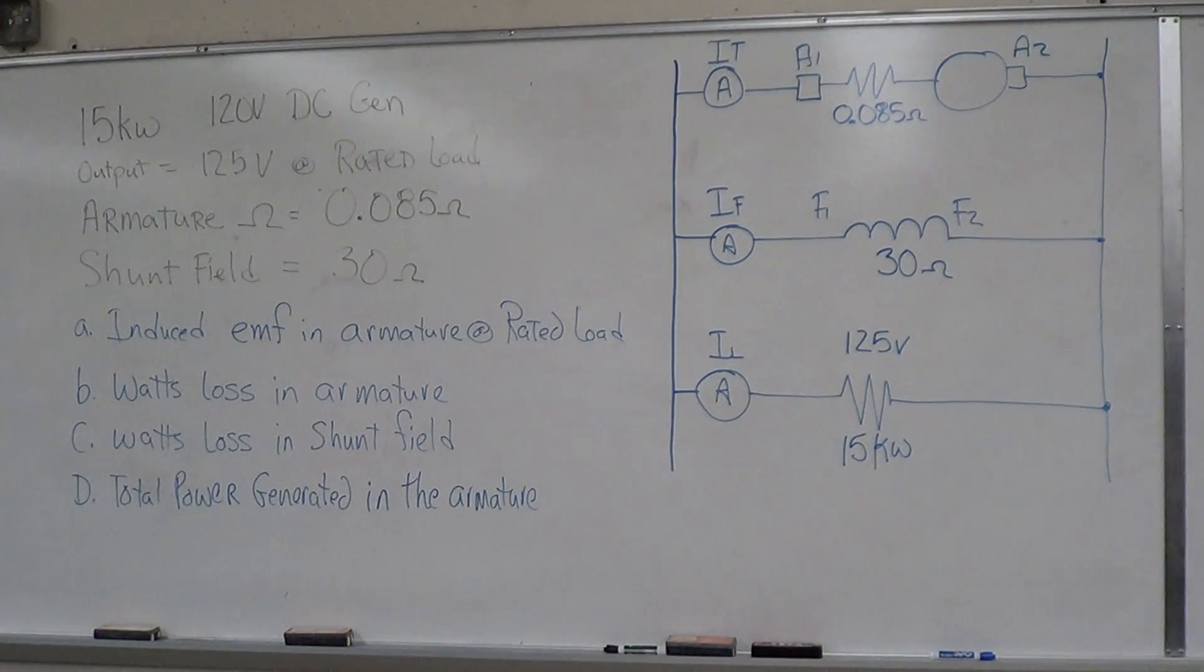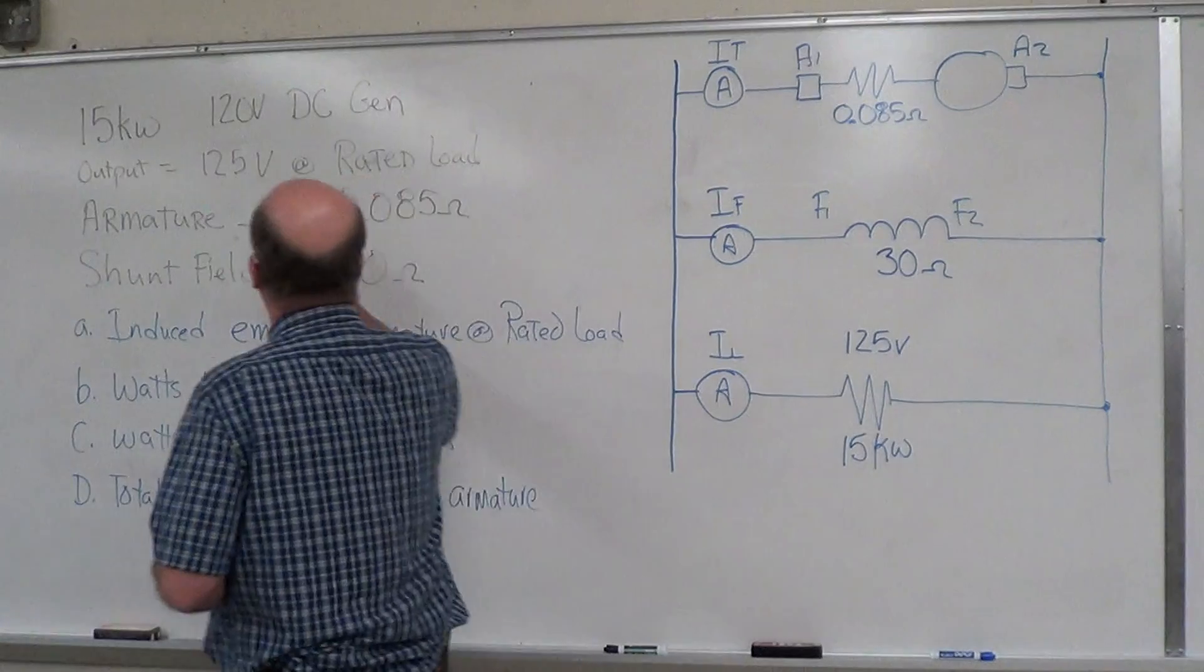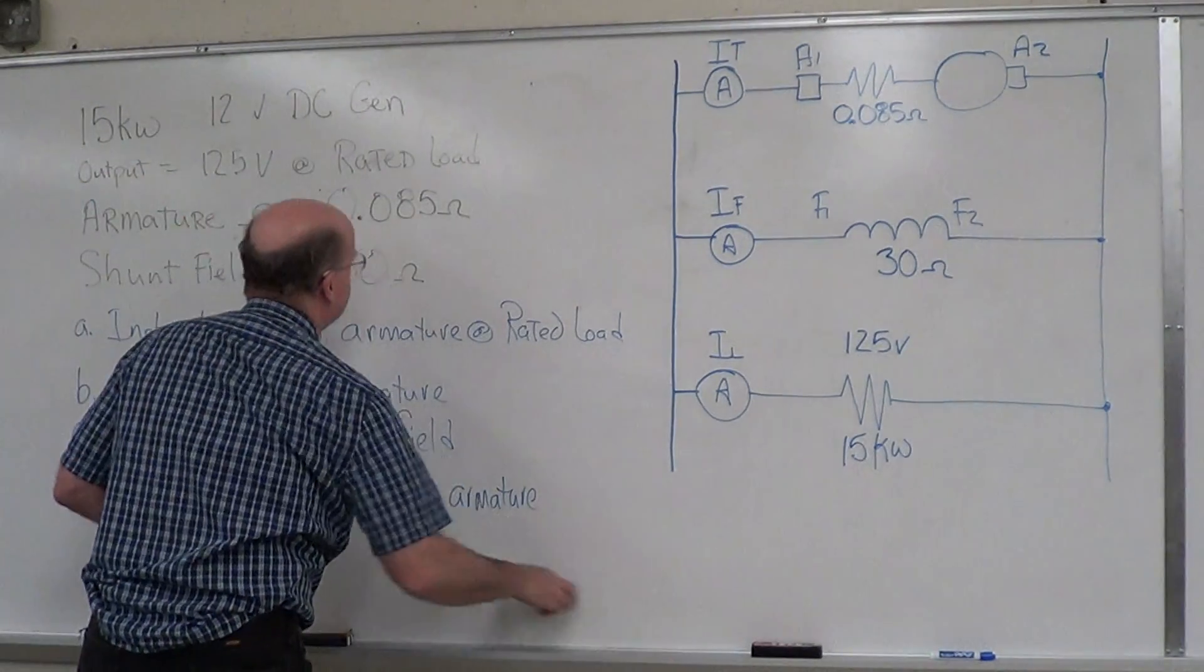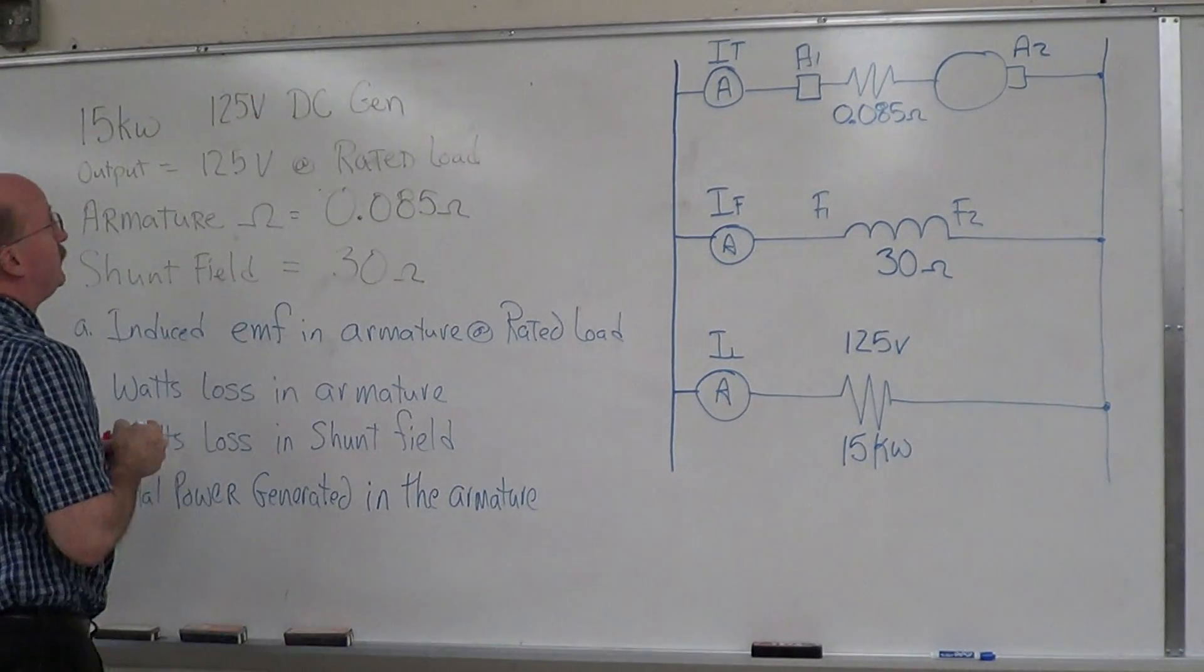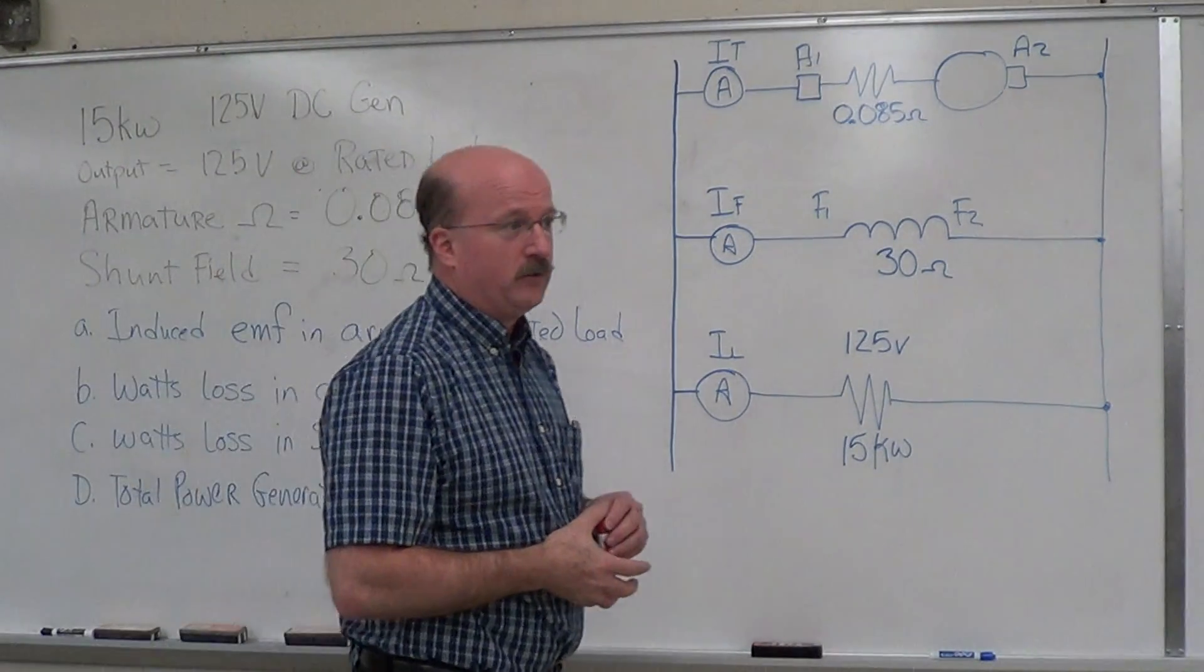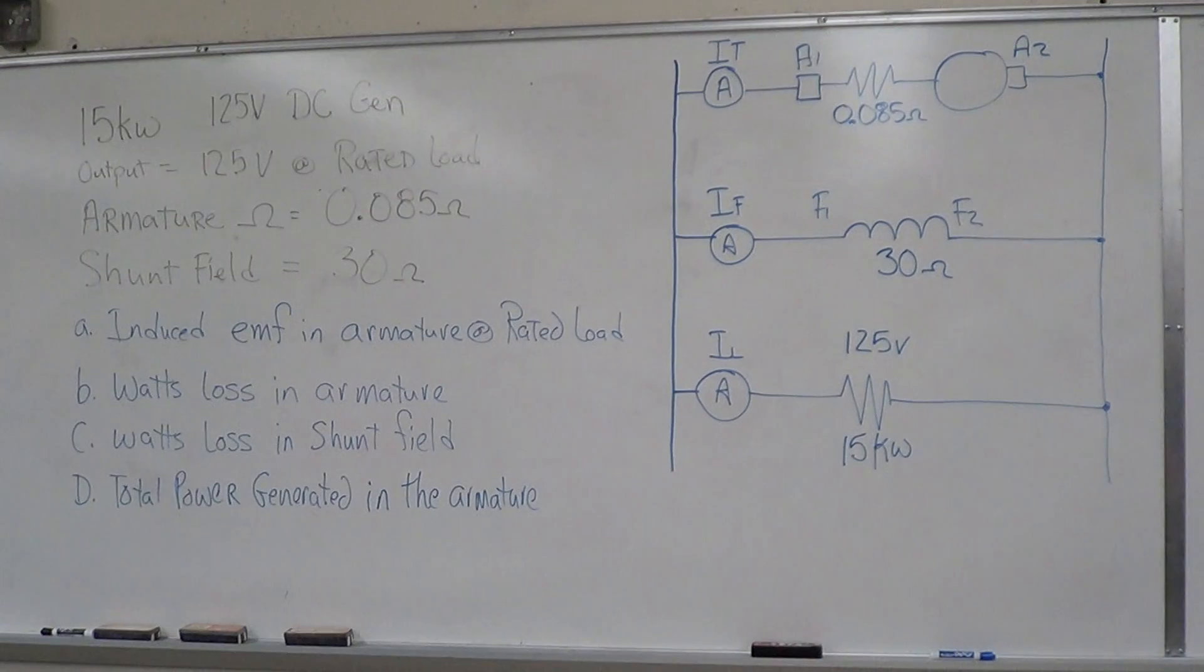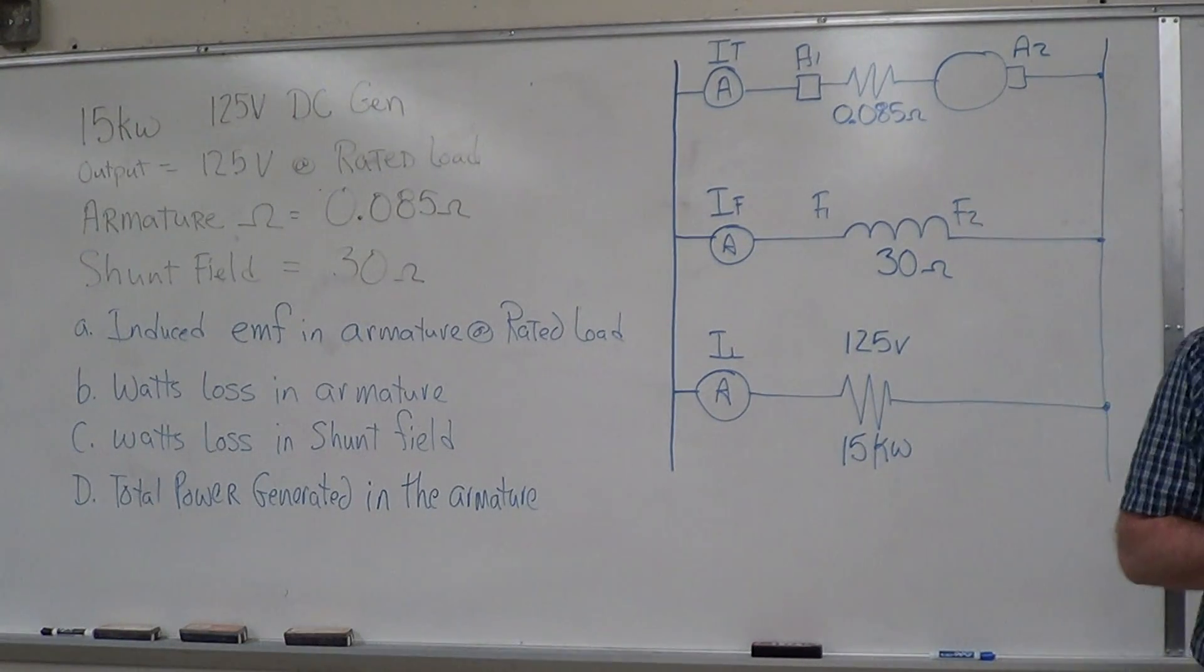Alright, we've got this generator problem. It's a 125 kilowatt, 125 volt DC generator. The output is going to be 125 volts at rated mode. We'll be doing our calculations at rated mode.